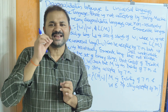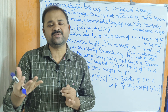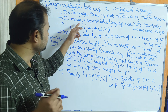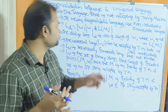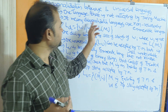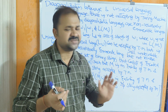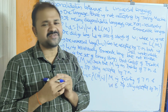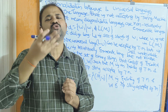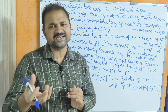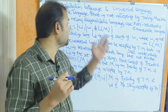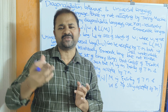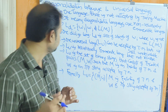Diagonalization languages are non-recursively enumerable languages, because those languages are not accepted by the Turing machine. Recursively enumerable languages are those accepted by the Turing machine, whereas if a language is not accepted by the Turing machine we call it a diagonalization language. So a diagonalization language is a non-recursively enumerable language.